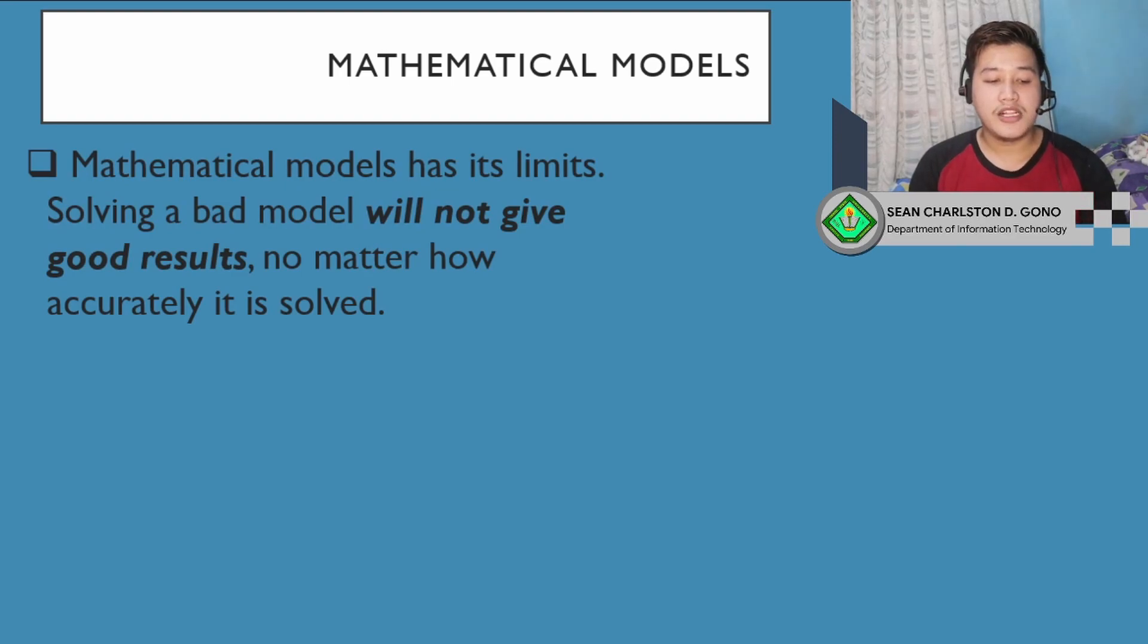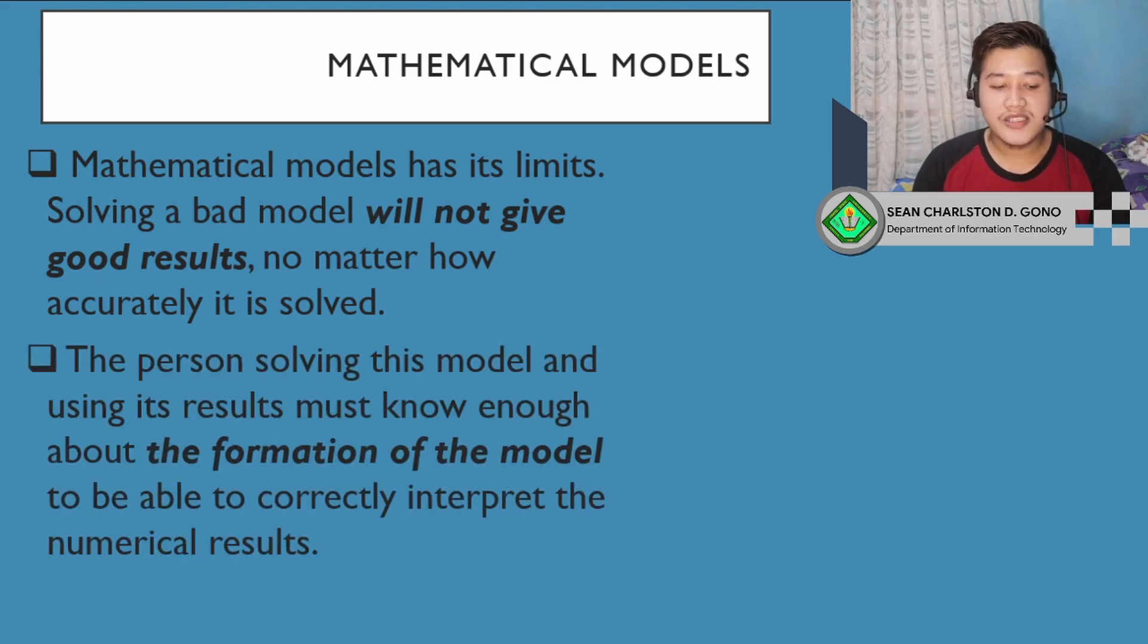As we've mentioned, mathematical models have their limits. Solving a bad model will not give good results, no matter how accurately it is solved. The person solving this model and using its results must know enough about the formation of the model to correctly interpret the numerical results. The person, the scientist, the engineer, or the researcher that uses these models must know the limitations that exist when using these formulas. The limitation may be the computer, the environment itself, or the system itself. Those limitations must be taken into account in order to say whether the answer is accurate or not.